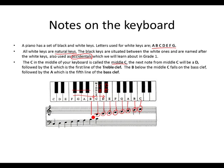Look at the B sitting on the bass clef. The middle Cs are the same. A is on the last line of the bass clef, then G on the last space of the bass clef, F on the fourth line of the bass clef, E sitting inside the space, D on the line, and C on the second space of the bass clef. This is where notes are located on the staff.